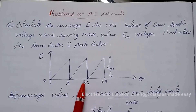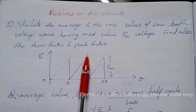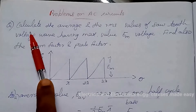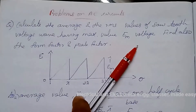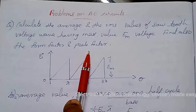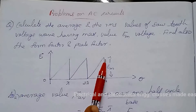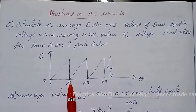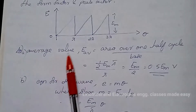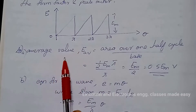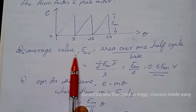Welcome to the new class. Today I am going to discuss problems on AC circuits. Calculate the average and RMS values of a sawtooth voltage wave having maximum value em volt. Find also the form factor and peak factor. This is the sawtooth wave given, where em volt is the maximum value and the time period is given as pi radians.